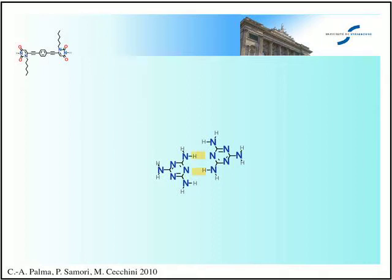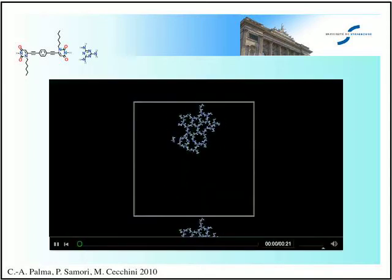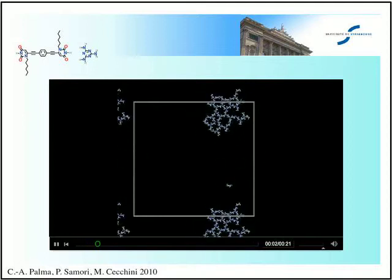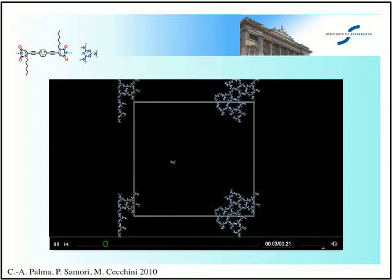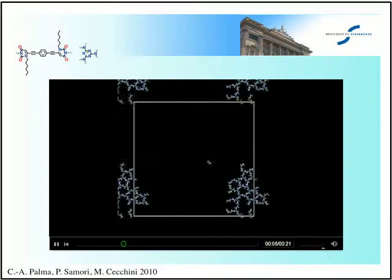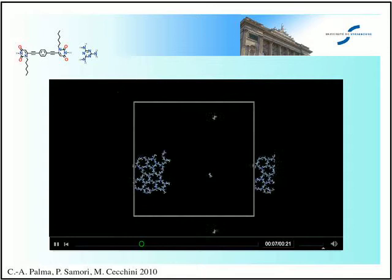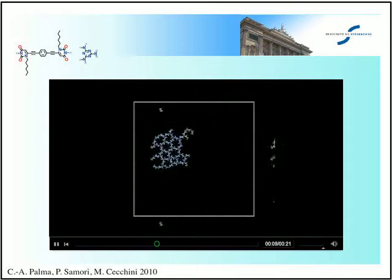We now turn our attention toward how we can reduce such observed frustration in order to promote the system towards its crystalline state. For this end, we scale down the energetics of self-interactions. What we now find is not only that our system clusters very rapidly, but it actually undergoes a transition towards a semicrystalline cluster below 200 ns.